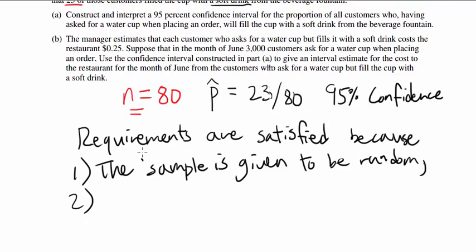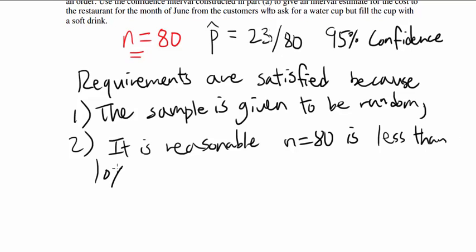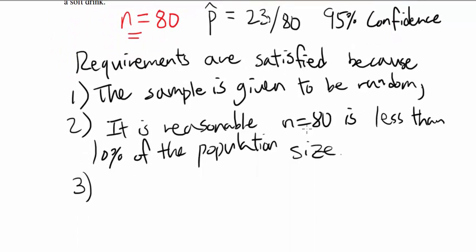Two, the second one is based on independence. It is reasonable the sample size of 80 is less than 10% of the population size. If it is more than 10% of the population size, we cannot really say there is significant independence because you are picking without replacement. If the sample size is too large compared to population size, you do not have the required independence. But in this case, it is reasonable that the amount of customers that ask for the water cup in the store is more than 800. So let's say that requirement is satisfied.